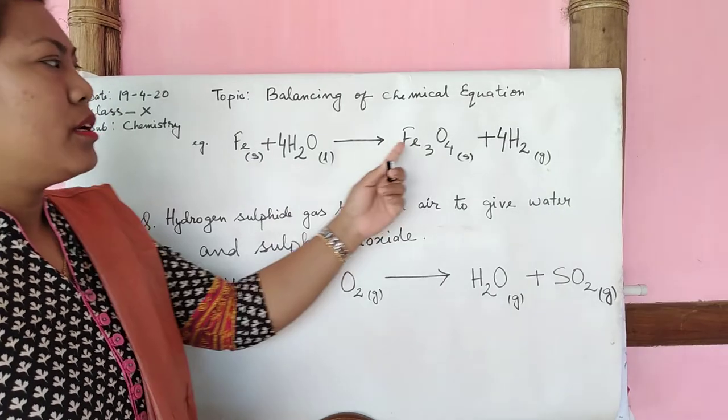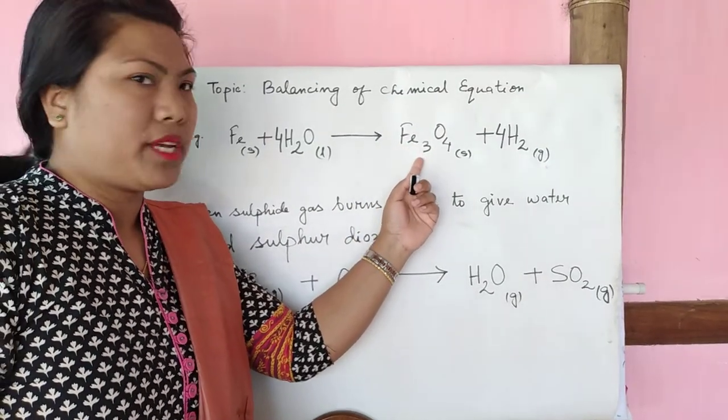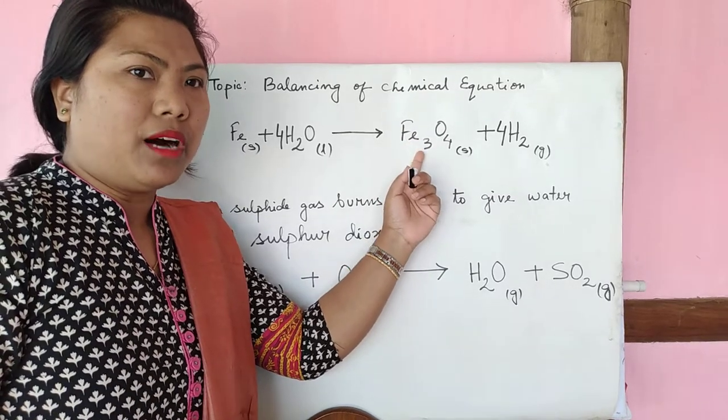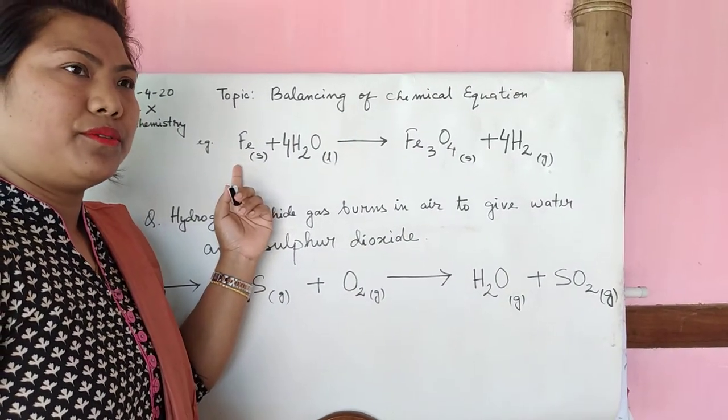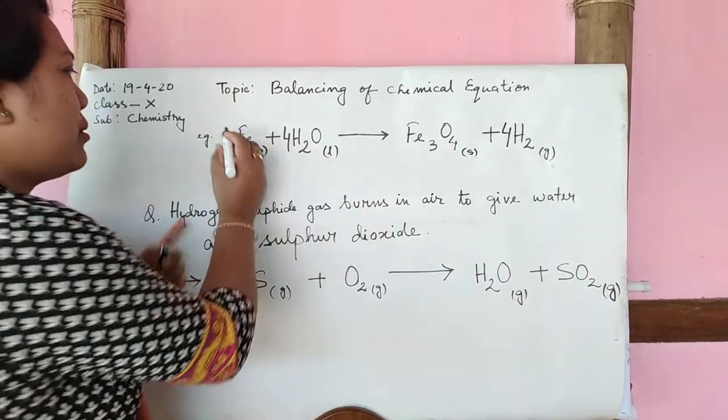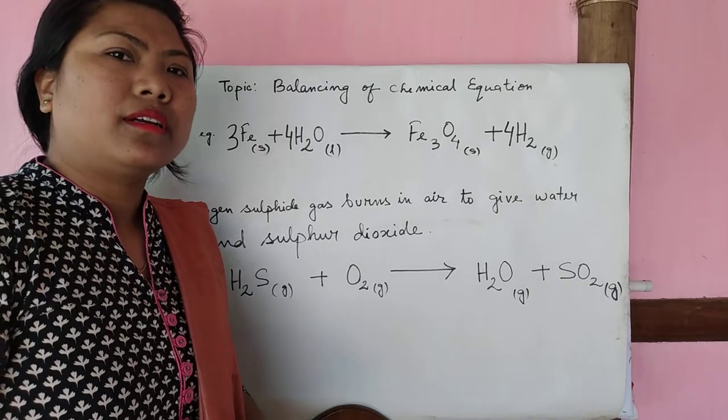Then lastly what you need, you left only iron atoms. How many atoms of iron? 3 on the product side. Then now you will get on the reactant side 3. So just simply put 3 and finally you balance your chemical equation.